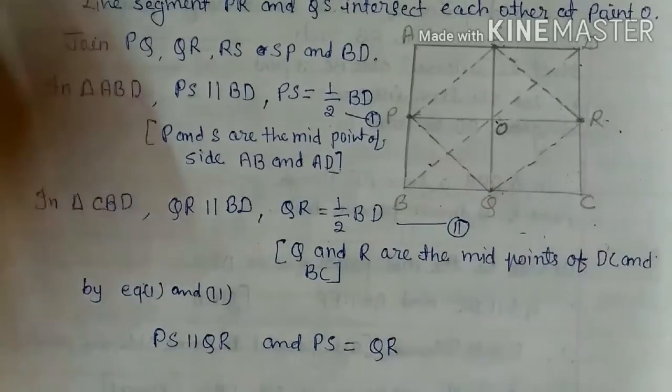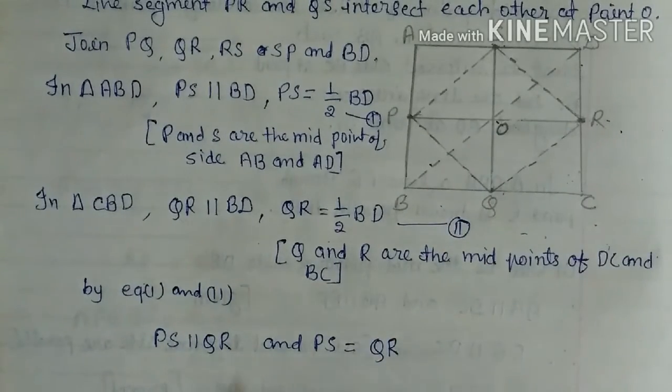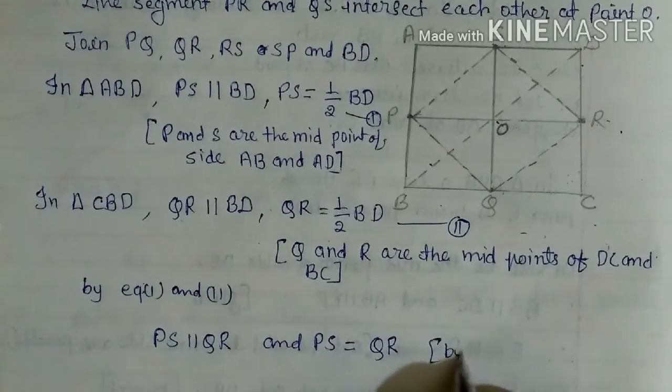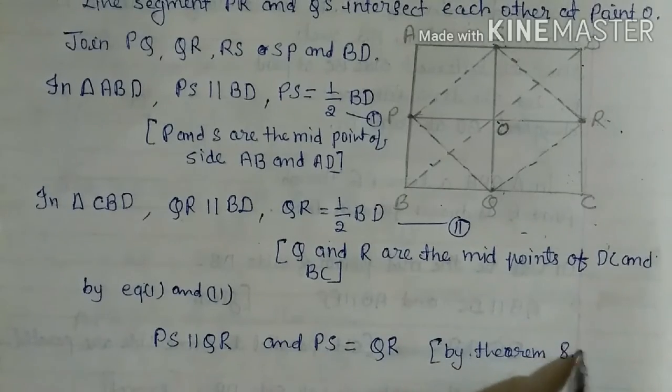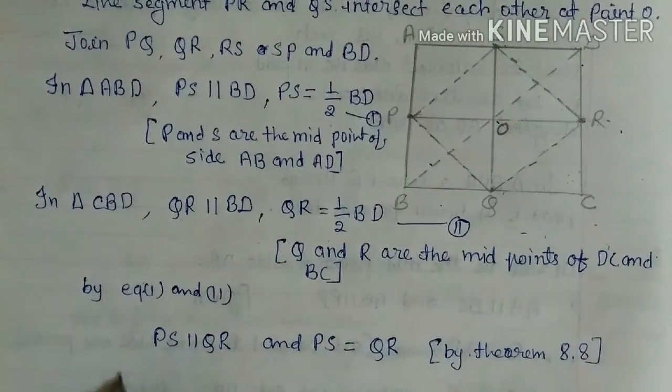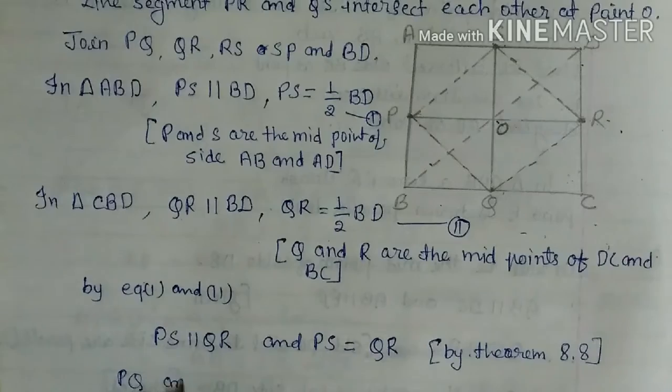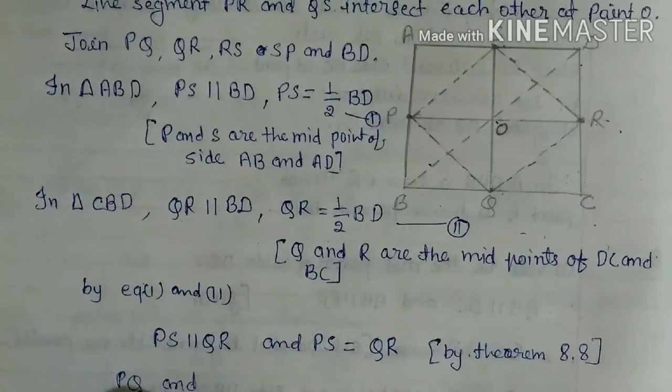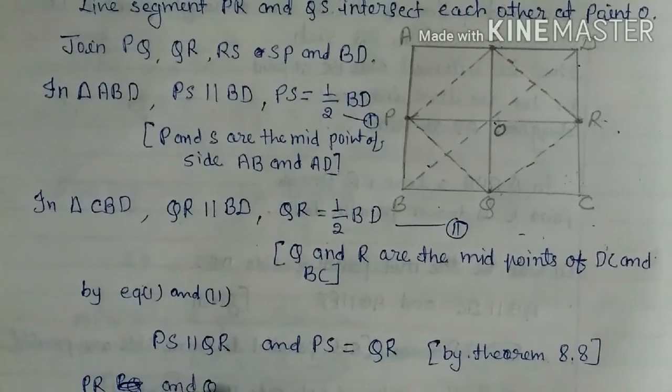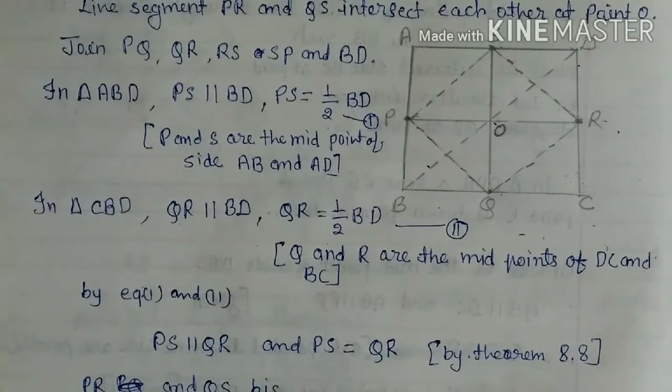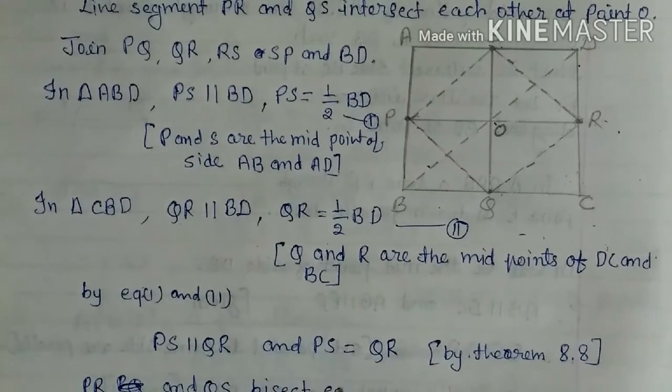And also PS equal QR. Here you can see PS is equal to QR. By theorem 8.8, PR and QS bisect each other.